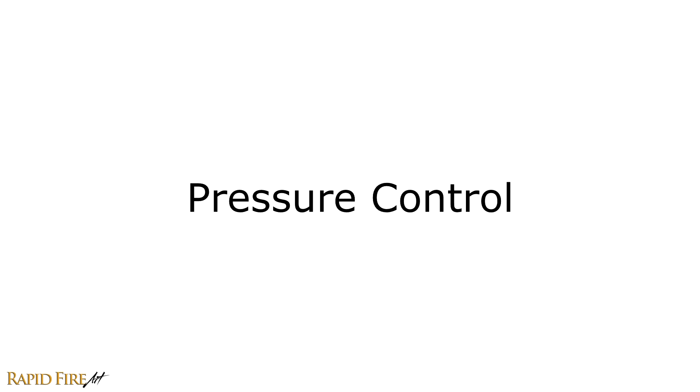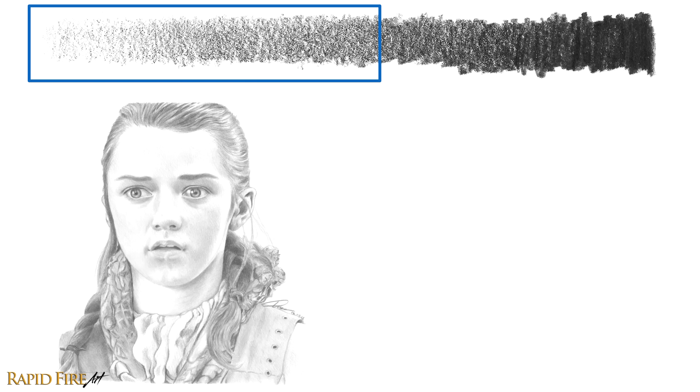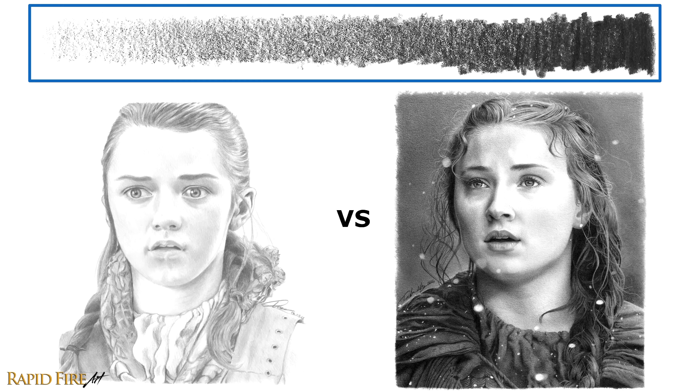Pressure control. Realistic shading is done by creating a series of values ranging from light to dark. The harder I press down on the pencil, the darker the strokes. Portraits displaying a limited value range can end up looking very flat, while portraits with a wider value range will pop.